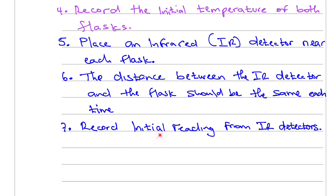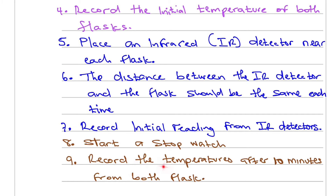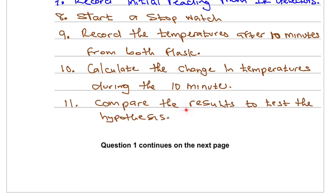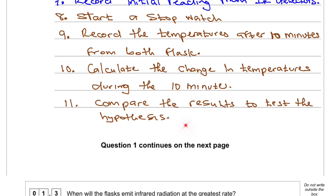Record initial readings from the IR detectors. Then start the stopwatch. Record the temperature after 10 minutes from both flasks. Calculate the change in temperature during the 10 minutes. Finally, compare the results to test the hypothesis.